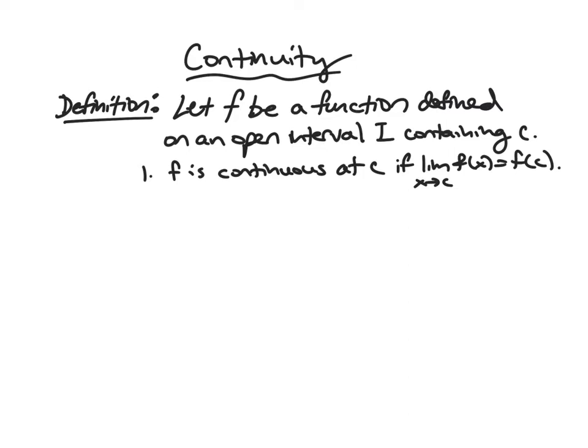So f is going to be a function defined on an open interval containing the point we care about, c, on the x-axis. f is then continuous at x equals c if the limit of the function as x approaches c is f of c. Basically, if the limit is what you get when you just plug in c.